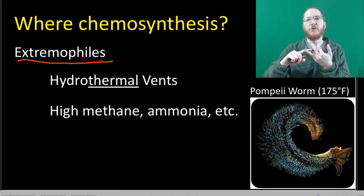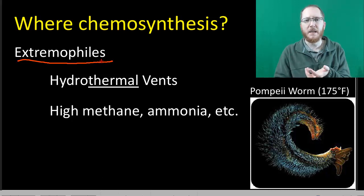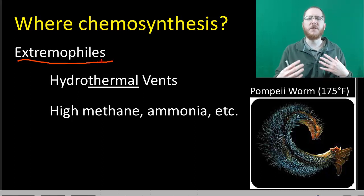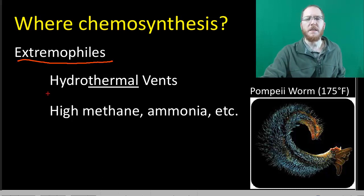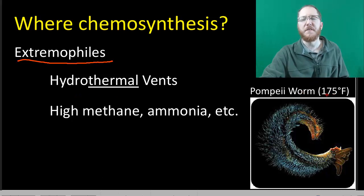They might like conditions that are extremely salty, extremely acidic. For our purposes with chemosynthesis, we'll see a lot of places that do chemosynthesis will be really hot. So you've got things like the Pompeii worm can survive at over 175 degrees Fahrenheit.